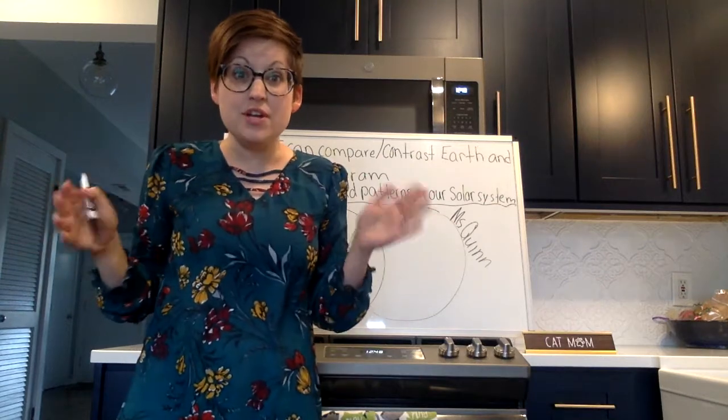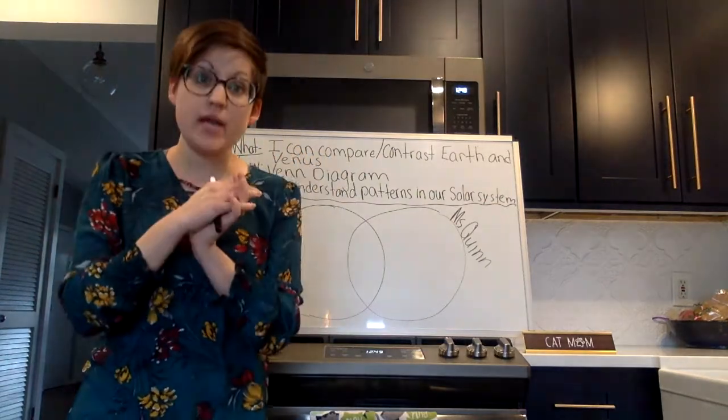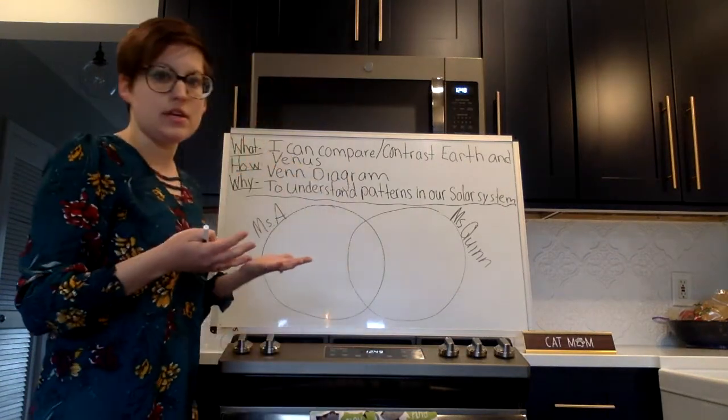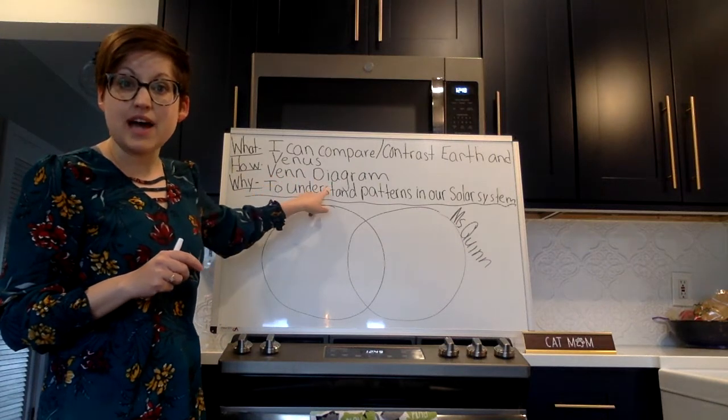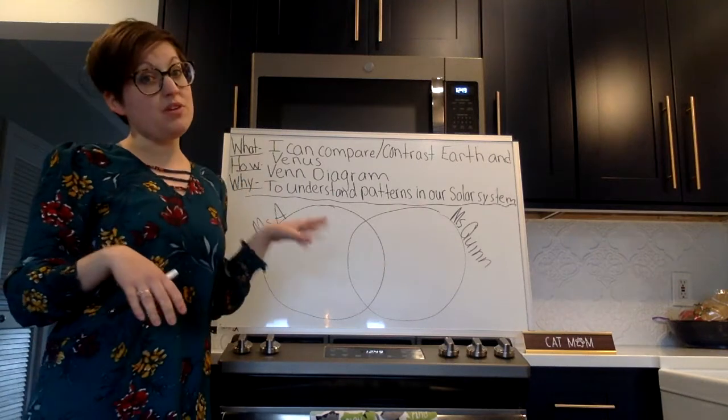So our job today is to compare and contrast those two planets. The way we're going to be doing this is by using a graphic organizer called a Venn diagram. This is something we've used before in first grade, but I want to review it to make sure you're clear about how it can help us understand patterns in our solar system.